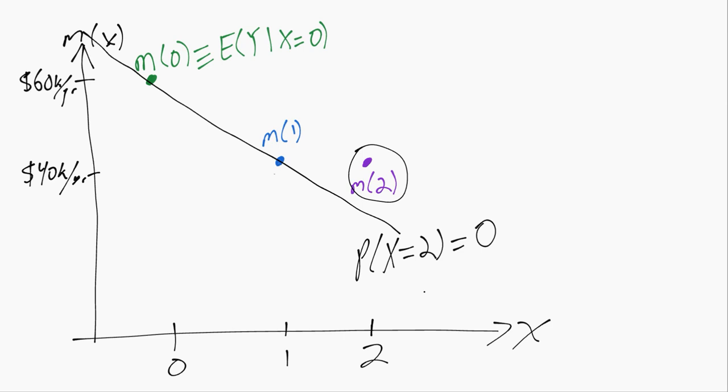Now, changing it just slightly, if you imagine there's some probability of two siblings but it's very small - not equal to zero but sort of near zero - then what will change is instead of giving no weight to the purple point, there will be a little bit of weight.